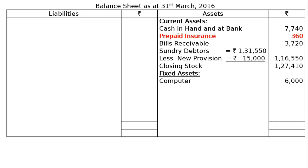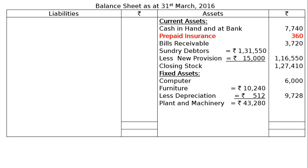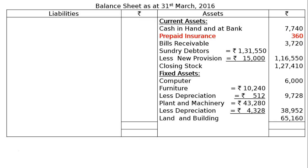Fixed assets: computer newly purchased Rs. 6,000, which was deducted from purchases and is now shown as a fixed asset; furniture Rs. 10,240 less depreciation at 5% = Rs. 512, final column Rs. 9,728; plant and machinery Rs. 43,280 less depreciation Rs. 4,328 (10%), final column Rs. 38,952; land and building Rs. 65,160 with no depreciation or adjustment. Total of the asset side is Rs. 3,75,620.